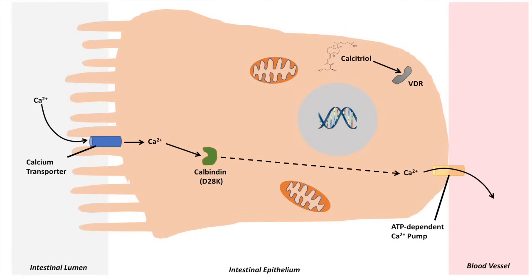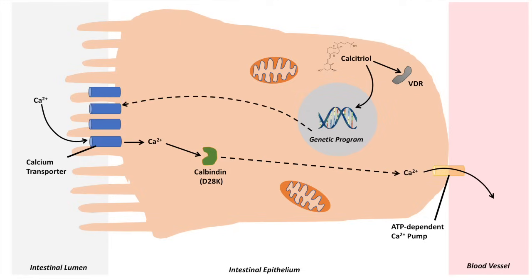This receptor is actually a transcription factor and will bind to something else known as retinoid X receptor, though that's not important here. When calcitriol binds to the vitamin D receptor, it enters the nucleus where it activates a genetic program that increases the transcription, translation, and expression of calcium transporters, allowing the enterocyte to uptake more calcium.